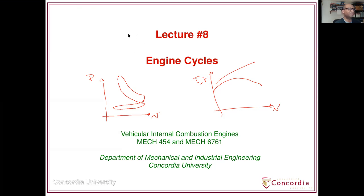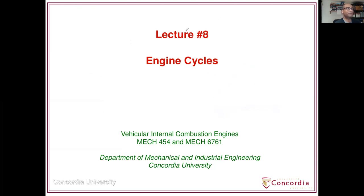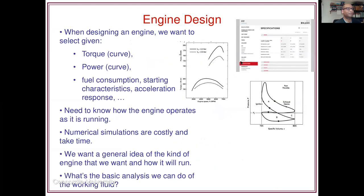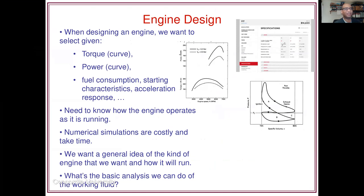Let's look at a specific example. We have an example — I think this was from a Honda Fit — so we have the specifications of the engine, operational specifications like the maximum horsepower, the maximum torque at a given RPM, and the maximum power at a certain RPM.